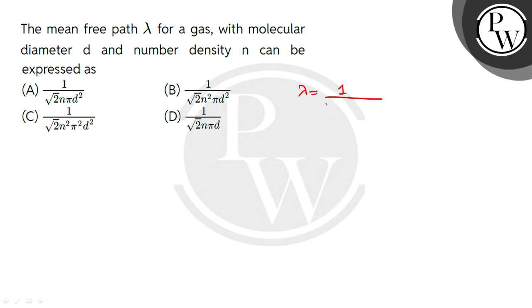Mean free path formula is 1 by root 2 pi n d square. n is the number density, i.e., number of molecules per unit volume.